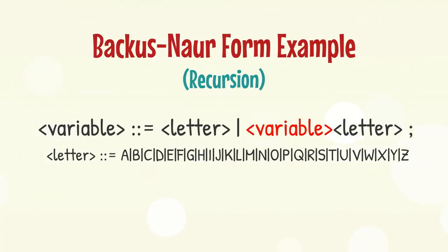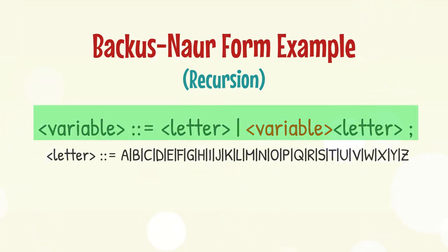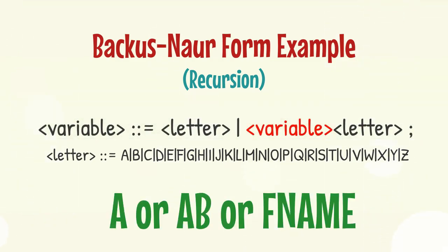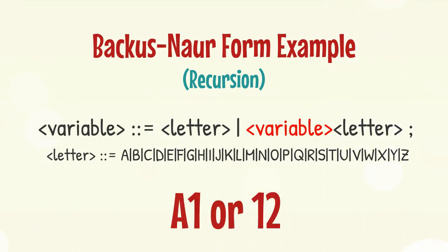BNF notation can be used for recursive definitions, where an item definition can refer to itself. For example, a variable name consisting of a single or any number of letters. So according to this BNF, A, AB, or FName are correct, but A1 or 12 are not correct.